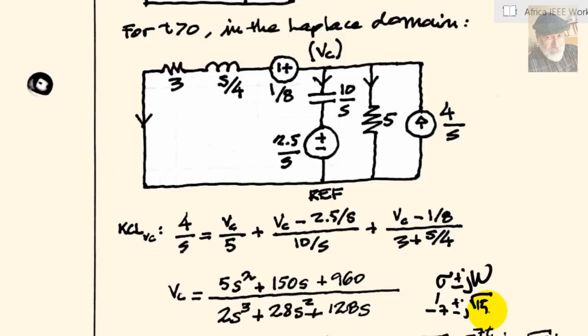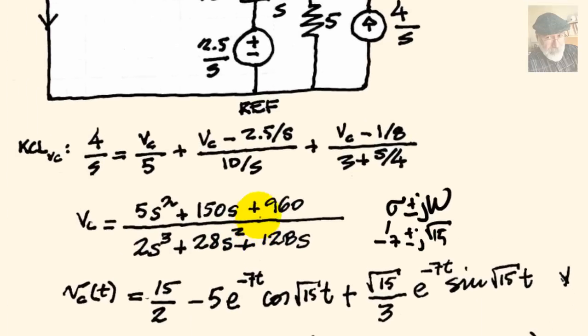Now, from this one, we find with the calculator what is the inverse Laplacian form, and this is what we get. It was correct if you wrote this as a mathematician would, with a cosine term and a sine term, that is fine. There, we realize that the time constant is 1 over 7th of a second, and that the angular frequency is root 15 radians per second. The final value is 15 over 2, 7 and a half volts.